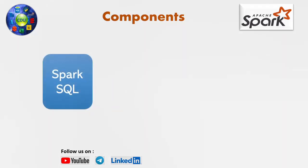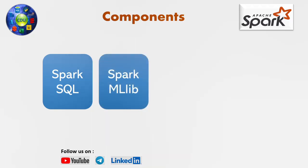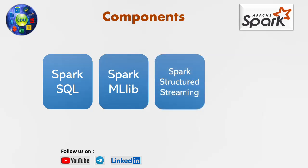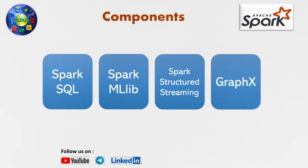The first and most important for data engineering is Spark SQL. This is one of the strongest components and we are going to be working with it very often. We will learn about Spark SQL in detail separately. The next is Spark MLlib, which is dedicated to machine learning libraries — we won't be covering that since our core focus is data engineering. The next one is Spark Structured Streaming, which we will definitely look into. And another one is GraphX. So out of all four, for data engineering, two are the most important: Spark SQL and Spark Structured Streaming.